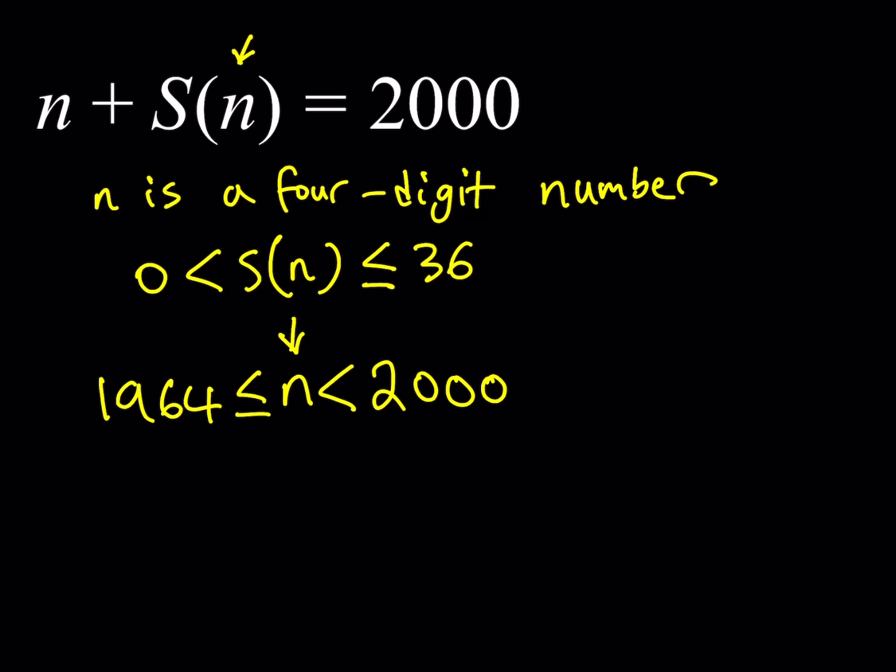Now notice that in this case, we have 1 plus 9 is equal to 10. So any number that's greater than or equal to 1964 is going to have a sum of digits that is greater than 10. So that's basically the minimum we have to have. We definitely know that it's going to be greater than 10, because if you calculate the sum of the digits of 1964, you're going to get a value that is larger than 10.